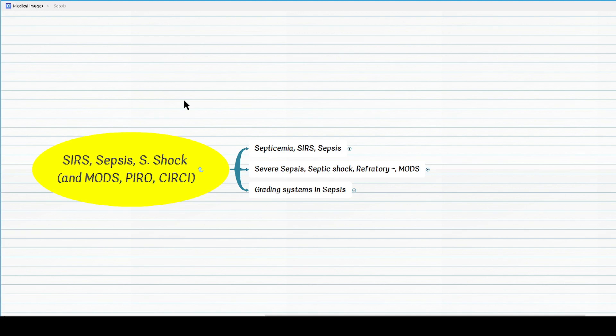As well as the severe forms, which are severe sepsis and its differentials, which include septic shock, refractory septic shock, and MODS or multiple organ dysfunction syndrome. At the end I would like to briefly discuss two commonly used grading systems in sepsis, namely PIRO and quick SOFA or sequential organ failure assessment score.